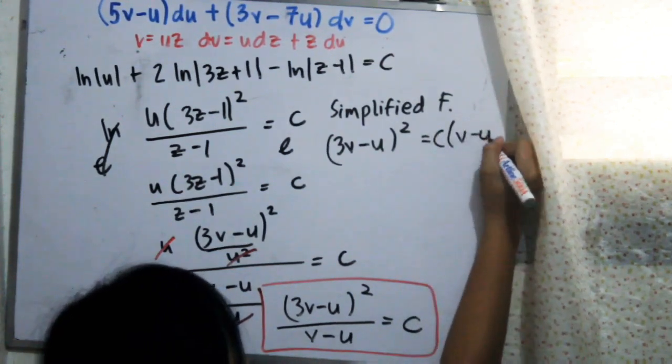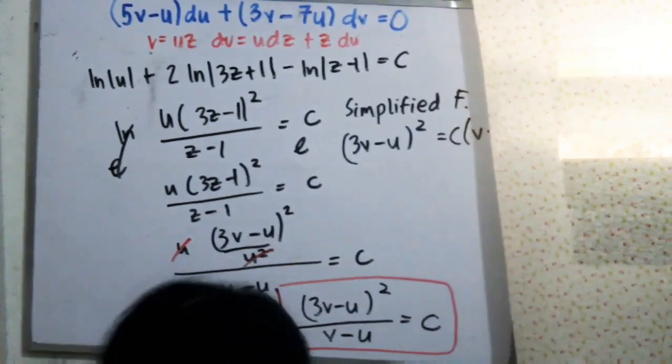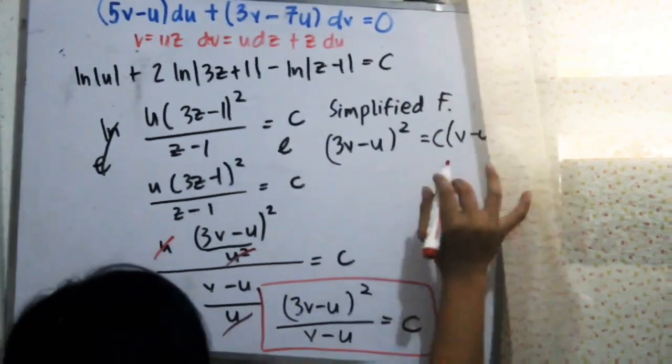Our simplified final answer is: (3V minus U) squared equals C times (V minus U). That is our final answer. Thank you for watching.